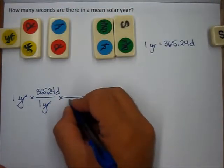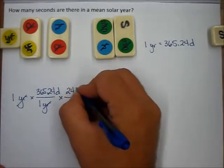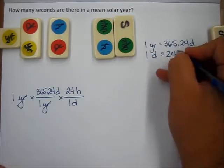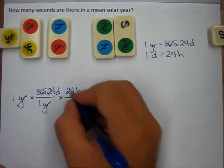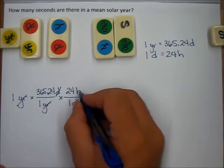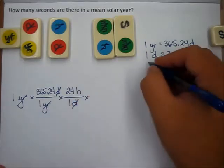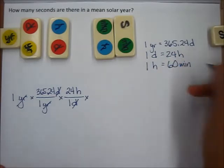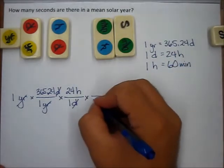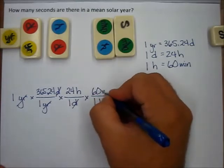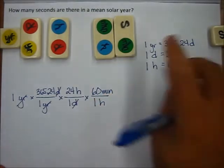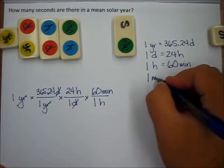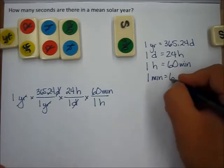That's how it would be in the book. The days cancel and now I'm in units of hours, and you'd have one hour is 60 minutes, and then what would it be, one minute is 60 seconds.